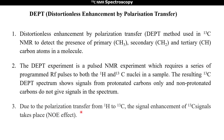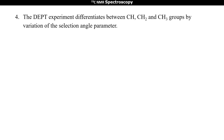Due to polarization transfer from 1H (proton) to the 13C nucleus, signal enhancement of the 13C signal takes place. This effect is also known as the Nuclear Overhauser Effect, or NOE effect, which enhances signal intensity. The DEPT experiment differentiates between CH, CH2, and CH3 groups by variation of the selection angle parameter.